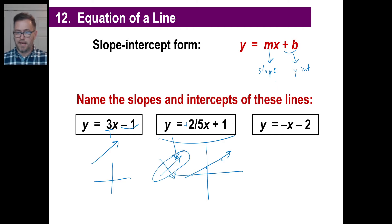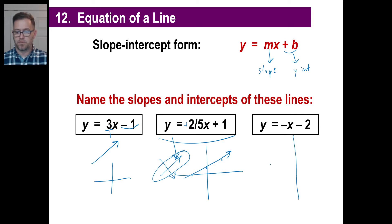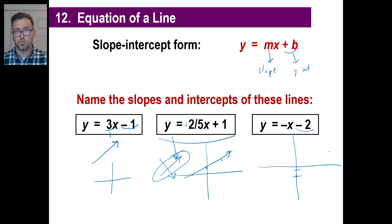y equals negative x minus two. First off, what's the y-intercept of this line? Here's the line — the y-intercept is this, so it's going to start off at negative two, and that'll be your first point. Now, is this line going up or down? It's going down.